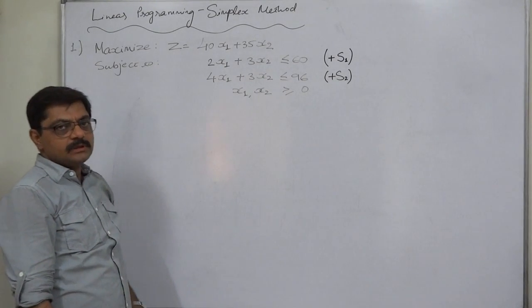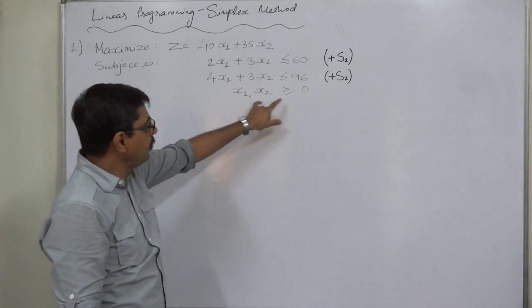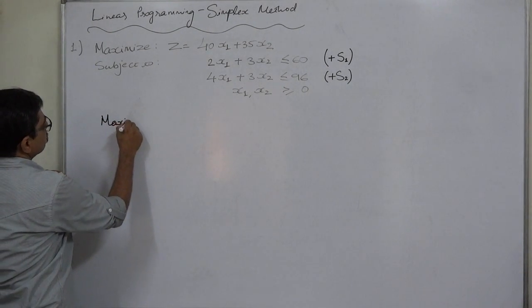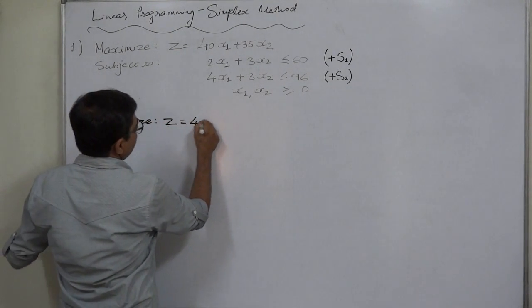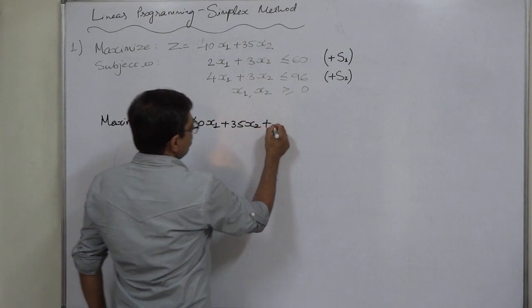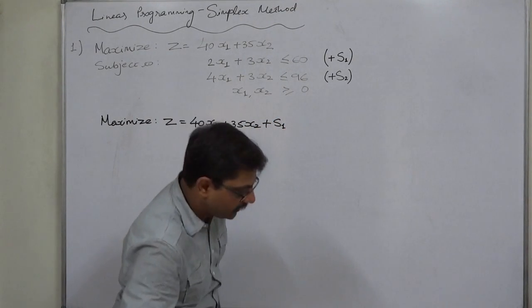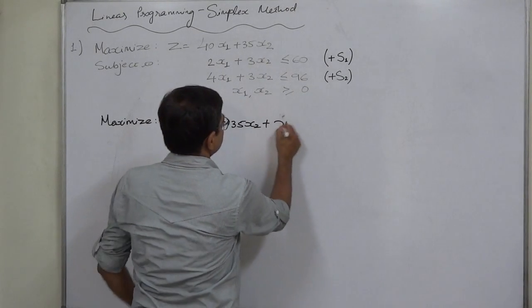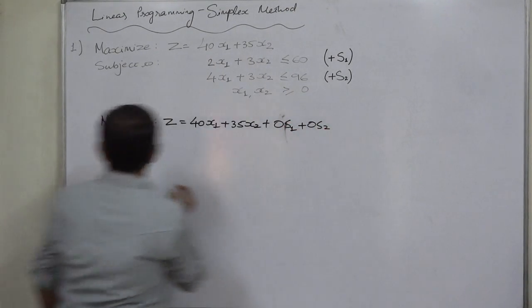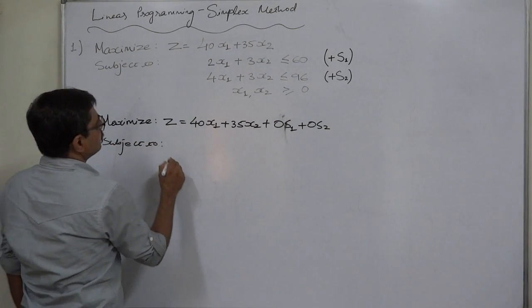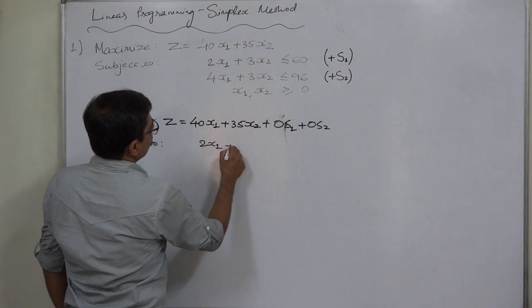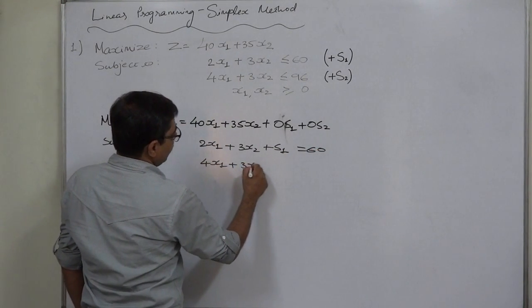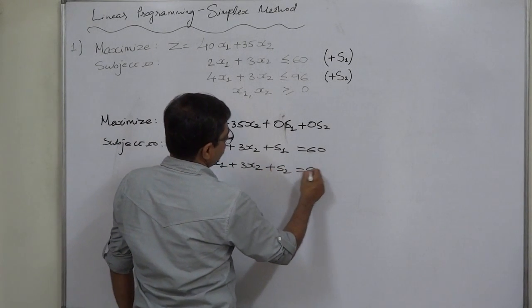Both slack variables are also non-negative. Converting to equality form, we now have four variables, all non-negative. The problem becomes: maximize Z equals 40x1 plus 35x2 plus 0·s1 plus 0·s2, subject to 2x1 plus 3x2 plus s1 equals 60, and 4x1 plus 3x2 plus s2 equals 96.